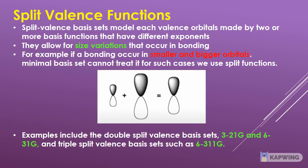Split valence basis sets model each valence orbital using 2 or more basis functions with different exponents, allowing for size variations that occur in bonding — for example, when bonding occurs between smaller and bigger orbitals. Minimal basis sets cannot treat such cases, so we use split functions. Examples include the double split valence basis sets 3-21G and 6-31G, and the triple split valence basis set 6-311G.